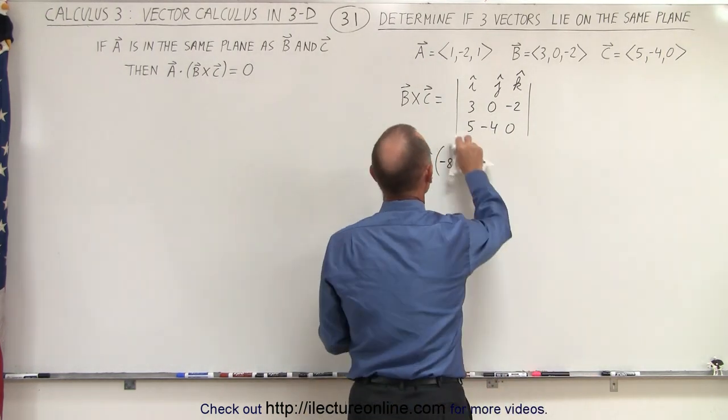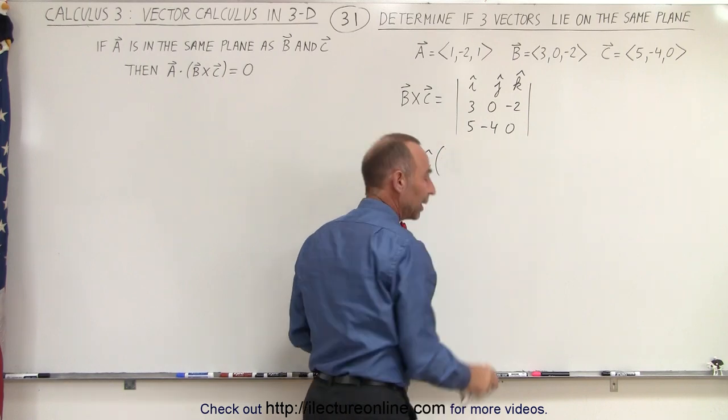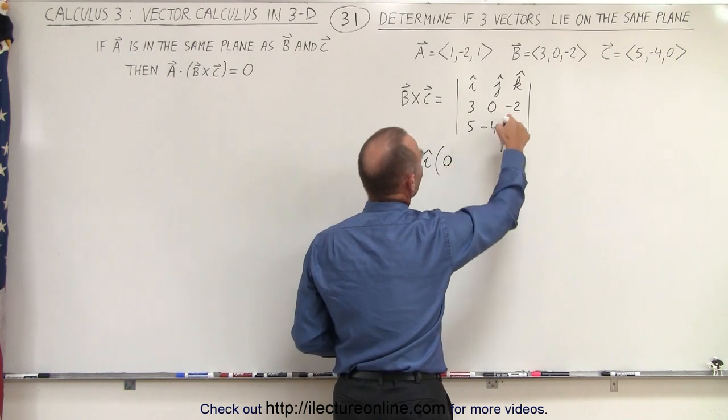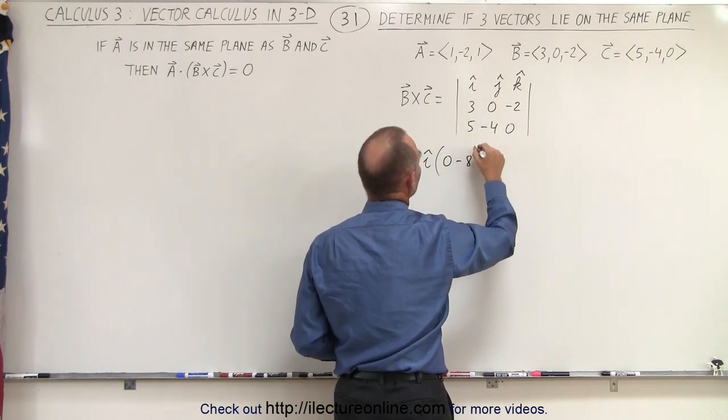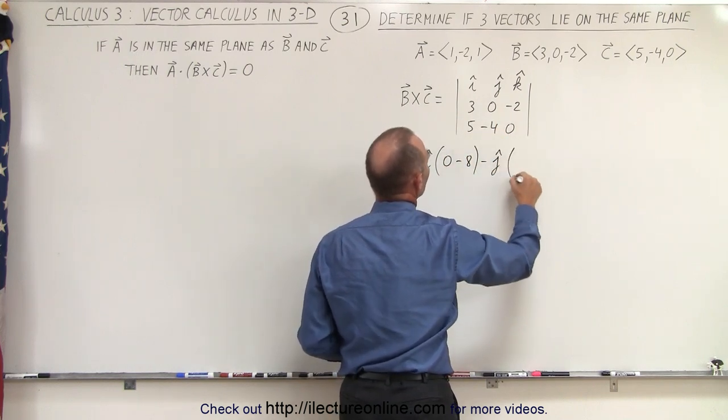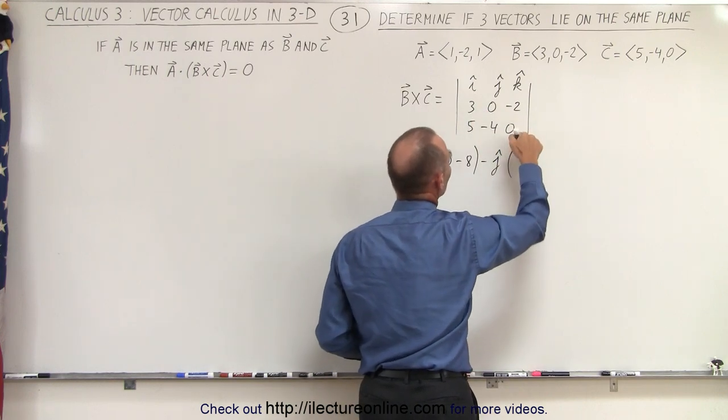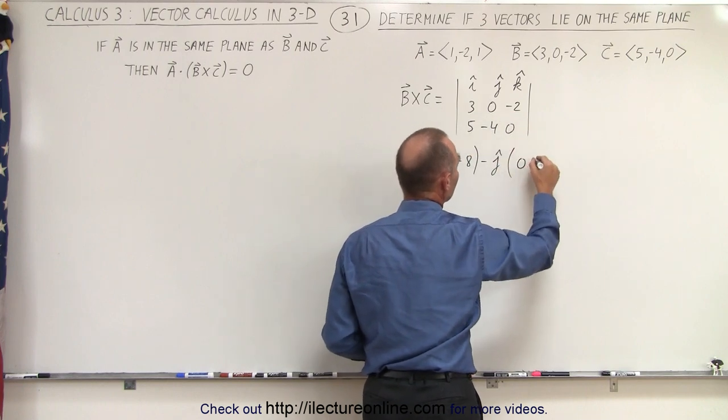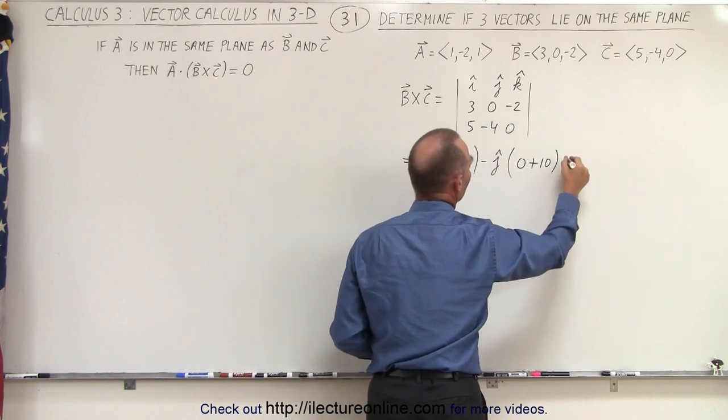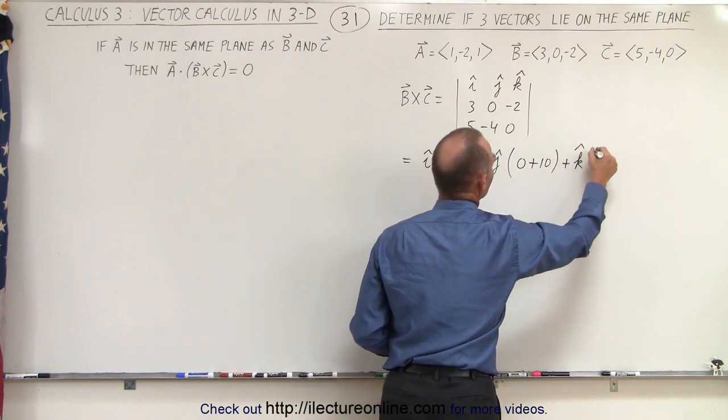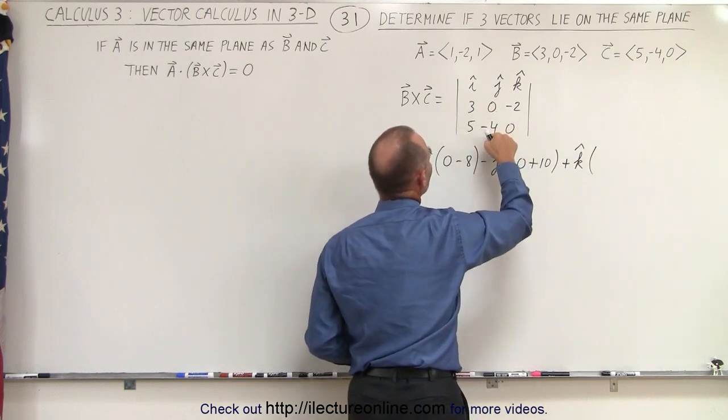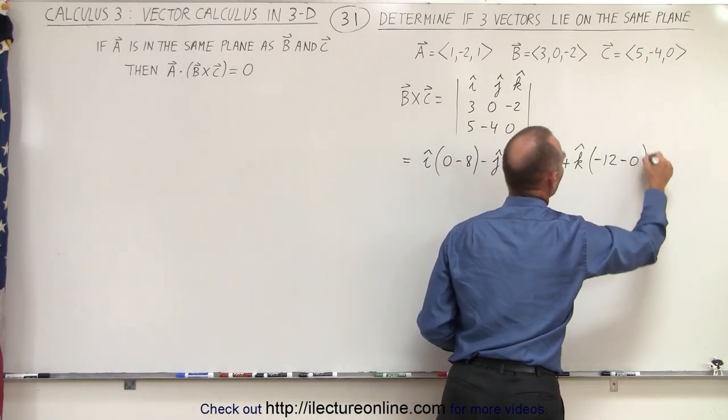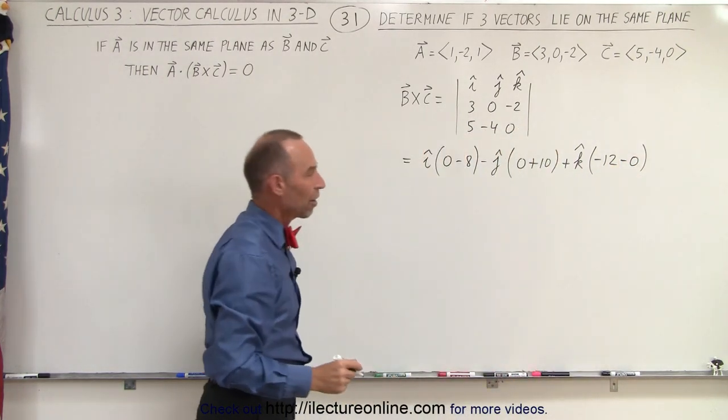Just so you can follow me a little bit better, let me write down both results. So we have I times 0 times 0, which is 0, and minus 8. Minus J times 3 times 0 is 0, and negative 2 times 5 is negative 10, but since we're subtracting it, that becomes a positive 10. Plus K times 3 times negative 4, that's negative 12, minus 0 times 5 minus 0. And that gives you the cross product.